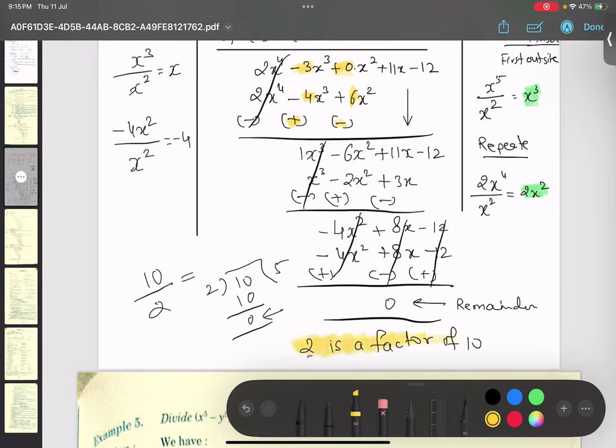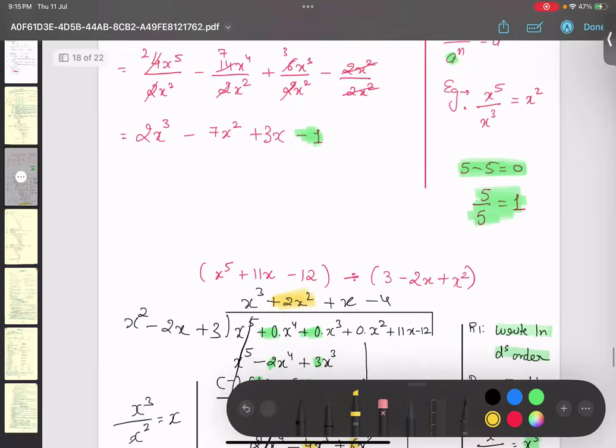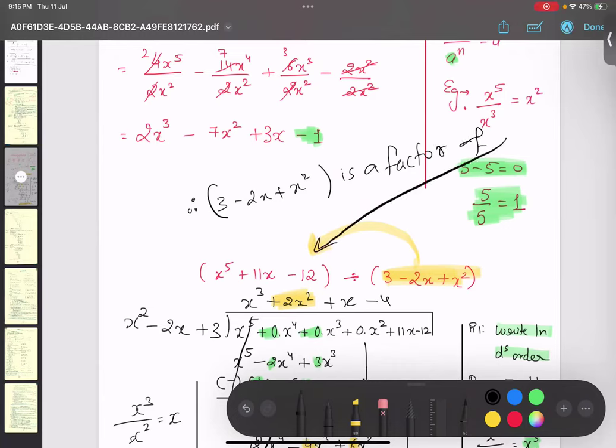So similarly, can we say this is a factor of this thing? 3 minus 2x plus x² is a factor of this thing. Is the logic clear?